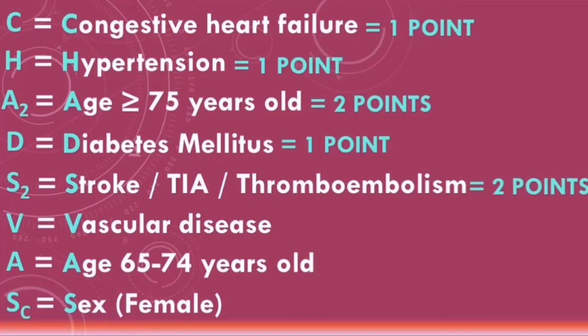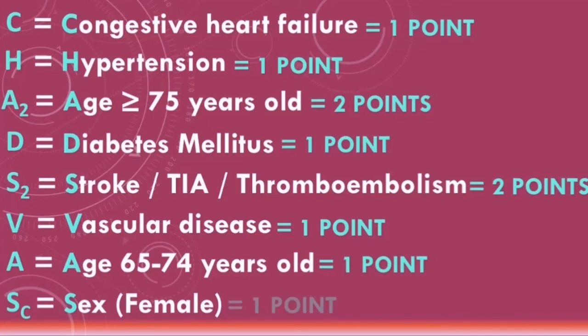Patients with a history of vascular disease score one point. Patients between the ages of 65 and 74 score one point. Patients who are female also score one point. This is how the CHADS-VASc score is calculated.